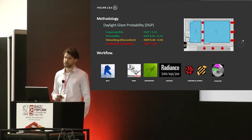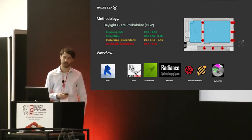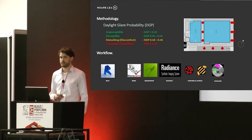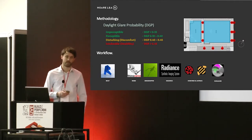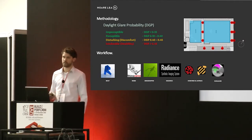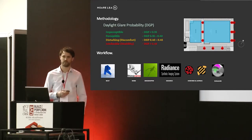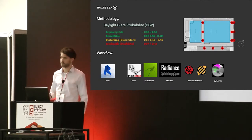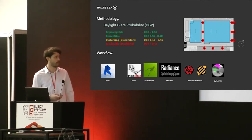The next step was to identify sensitive viewing positions around the pool where glare could occur. These positions not only applied to staff such as lifeguards but also to visitors at the pool spectating events.